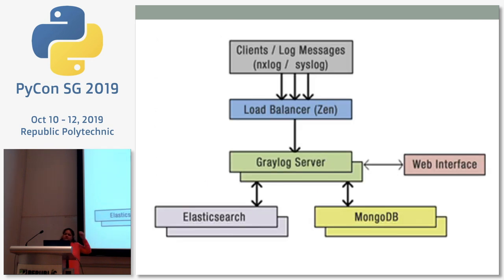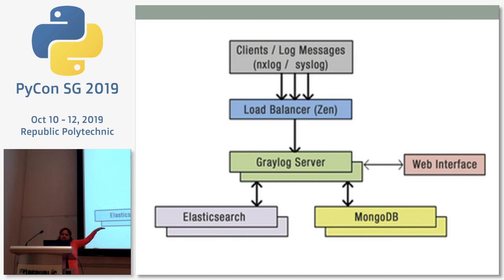This is the basic stack of Graylog. You have the service sending the logs. If you want, you can put a load balancer. If your logs are very large, you can have a cluster of Graylog. Then you have the Graylog server itself, which uses MongoDB — the write rates are very high — and uses Elasticsearch for indexing. And then it has its own web interface.